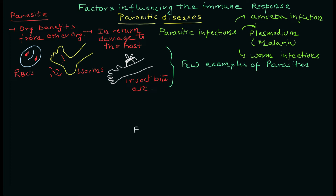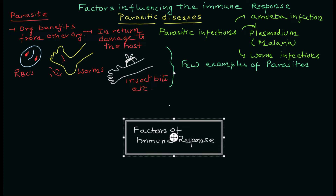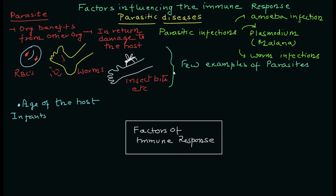Now we'll discuss the factors responsible for the survival and persistence of parasites in our body. There are various factors that are responsible. The first is the age of the host — if you are very young, an infant, or if you are old, both of these extreme ages are susceptible to parasitic infections.